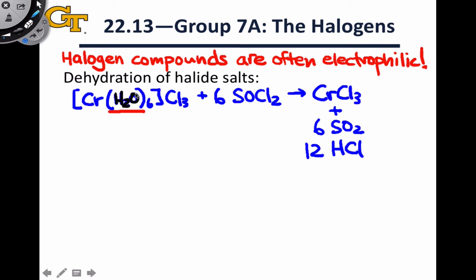We can find H₂O buried in these byproducts: SOCl₂ has picked up an additional oxygen atom in the products, and the 12 hydrogens in the 12 HCl account for the 12 hydrogens originally in the water. So we end up with six O and 12 H — that is, six H₂O — as well as the dehydrated salt CrCl₃.